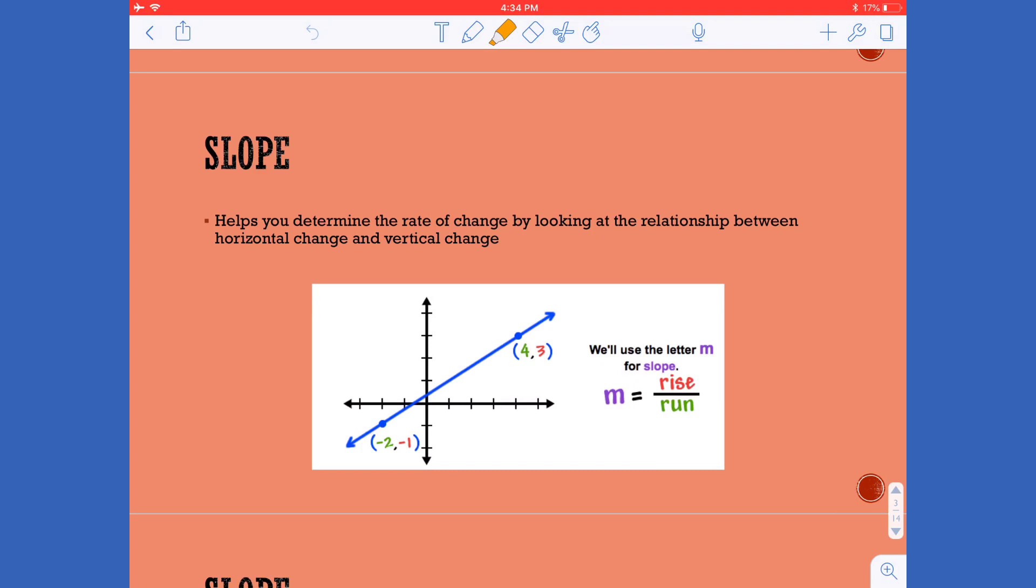When you're applying this concept of slope out in the real world you're really thinking about what is the cause and effect relationship between two items, what is the rate of change as my x is increased, what happens to my y's.